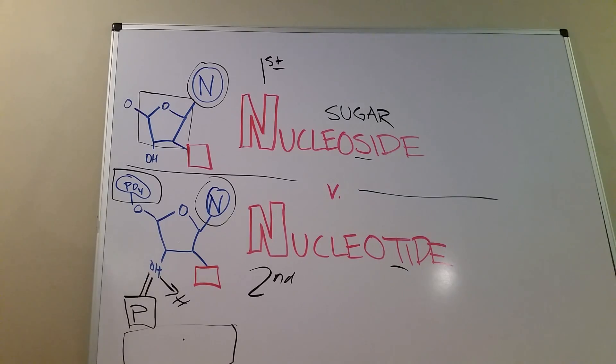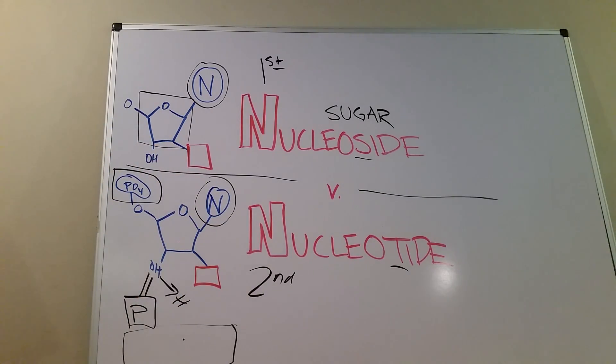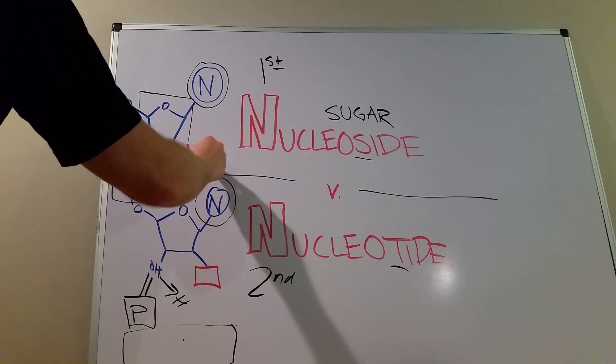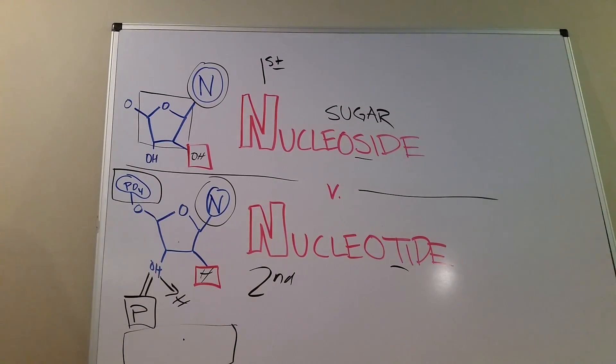The other thing I want to talk about quickly with this video are these red squares. Now, those red squares can include one of two things. They can either include a hydroxyl group or just a proton, just an H. And now why is that important?